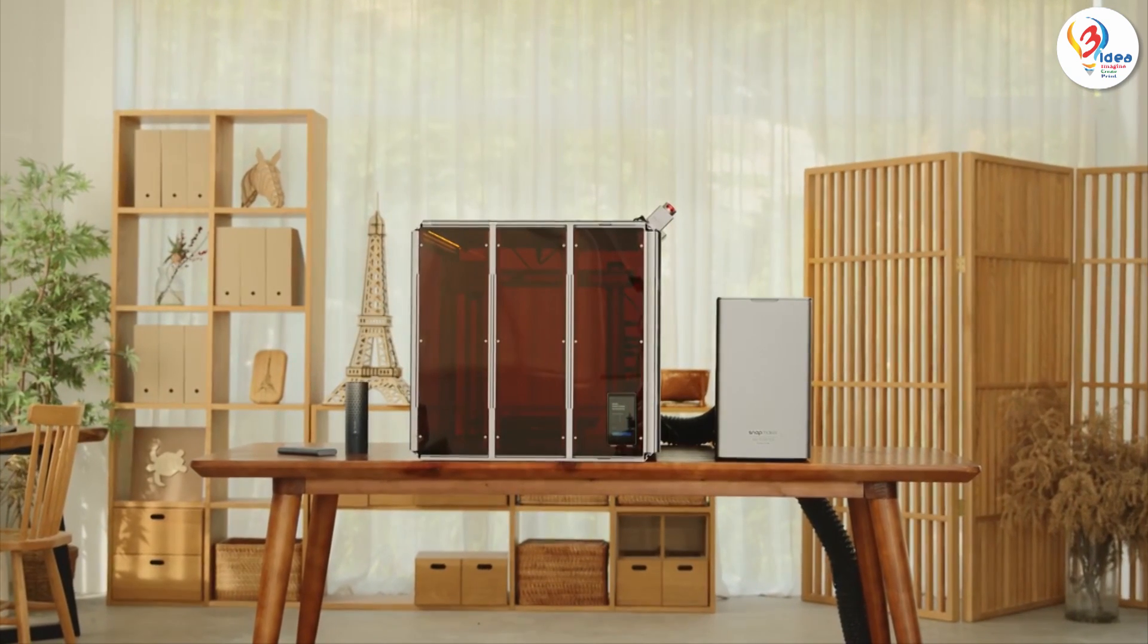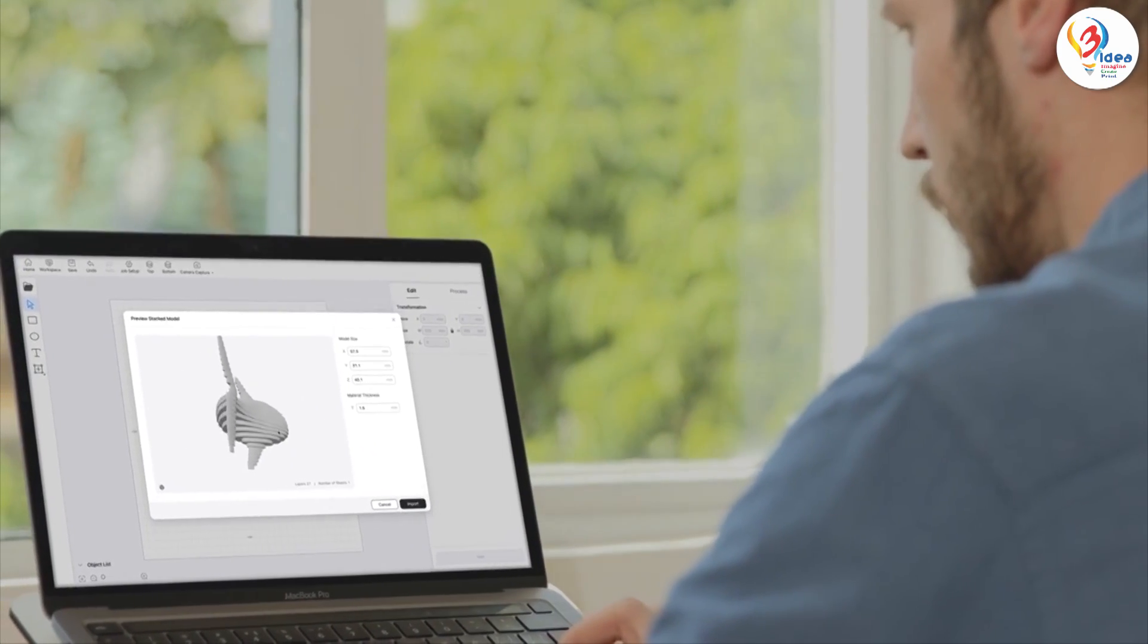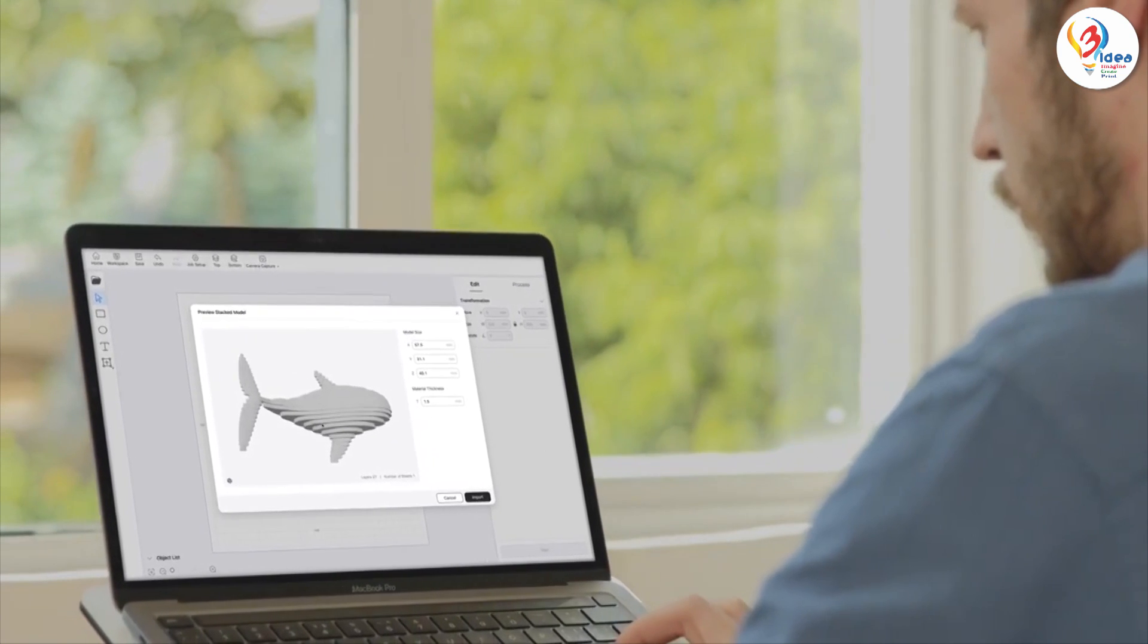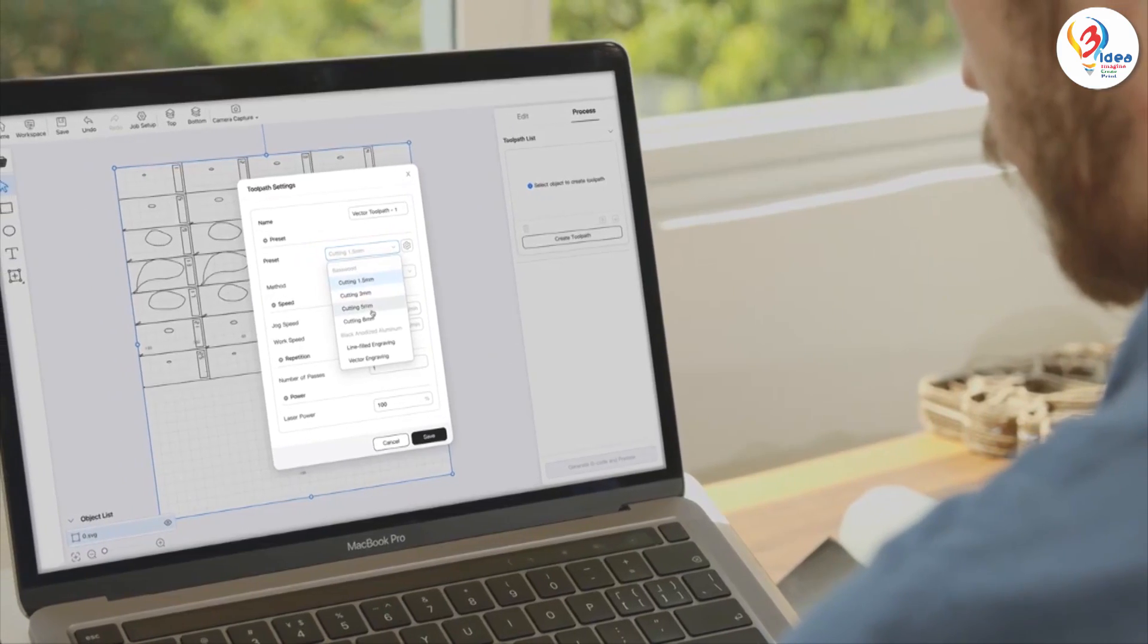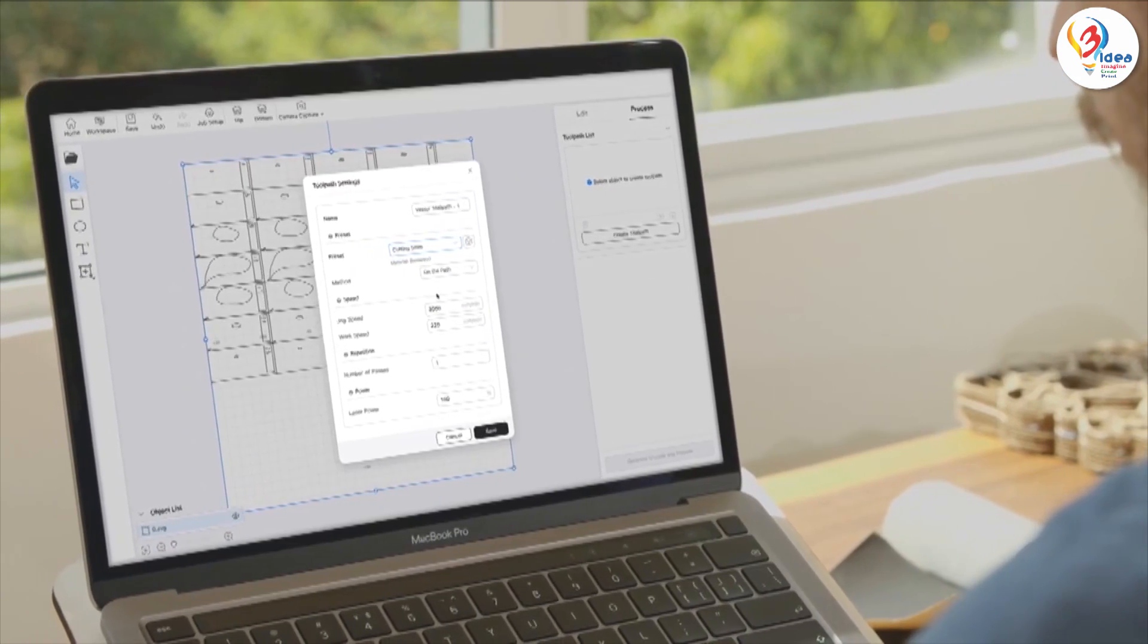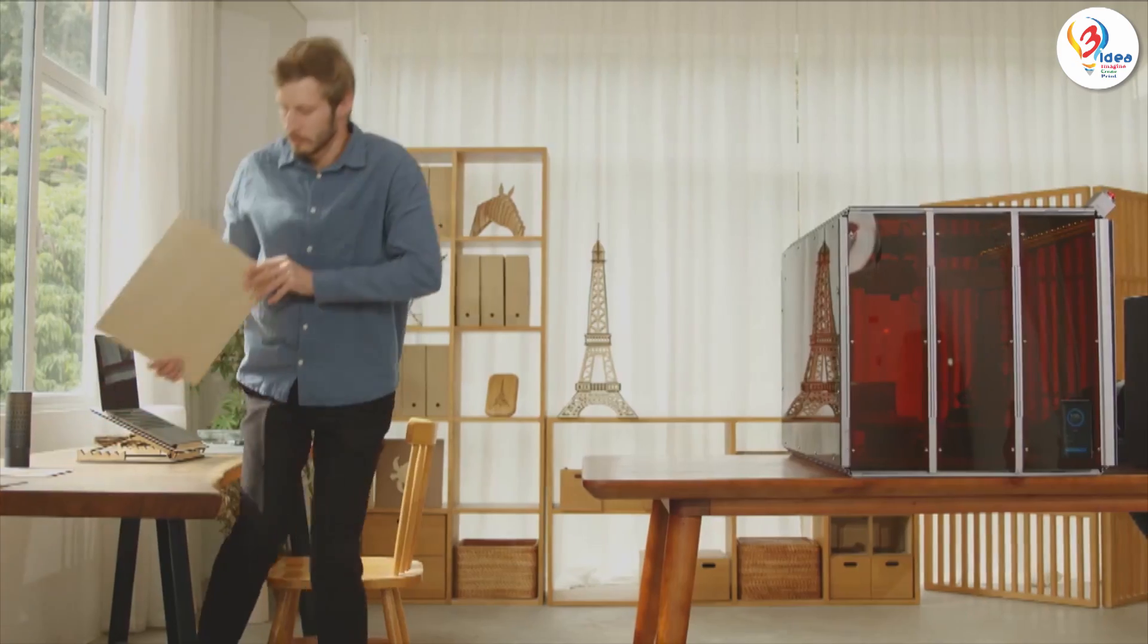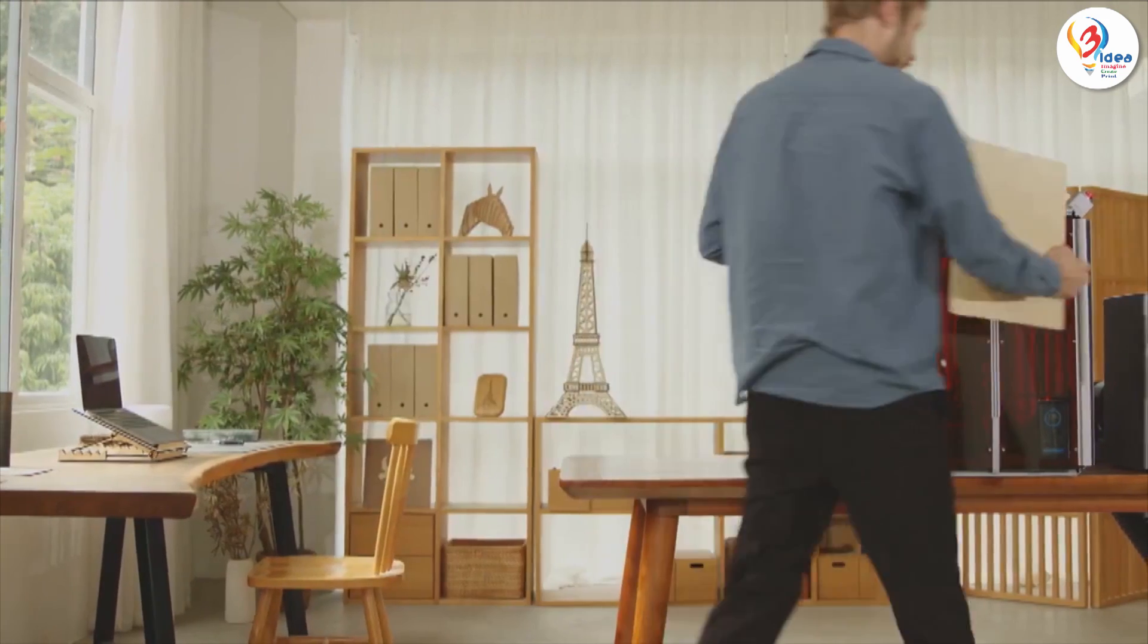To further improve user experience, Snapmaker Luban has been upgraded as well, making it possible to convert 3D models into cuttable vector images, and letting you access full sets of recommended parameters for common laser materials, so you can choose one and start right off.